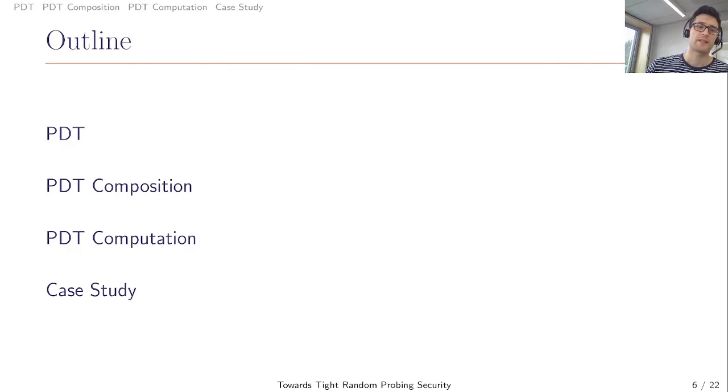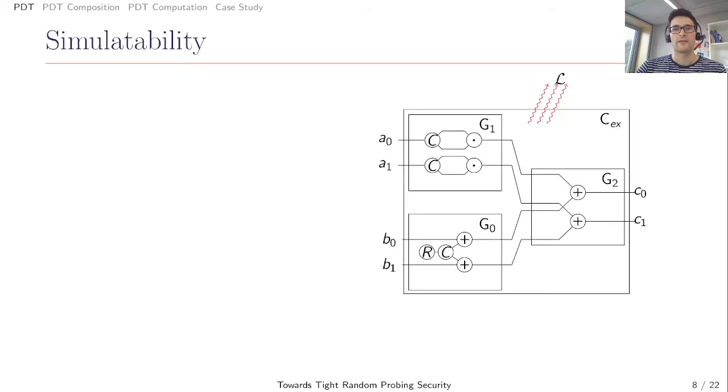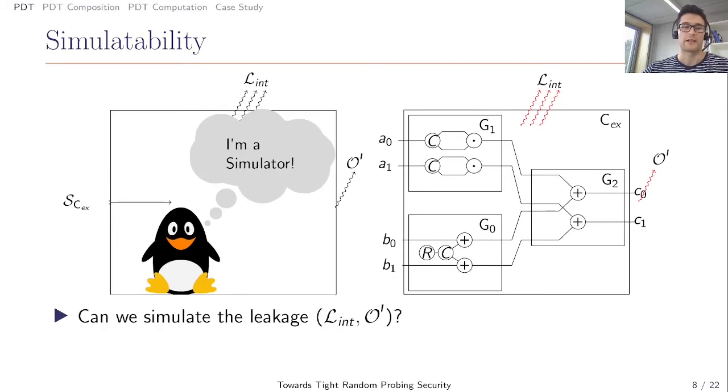For our new techniques we used a new definition, the prop distribution table PDT. In the following we will first explain the PDT, then we will give some composition results and explain how to compute them. In the end we will analyze the AES box with our PDT. So let's define the prop distribution table. For this we will consider our circuit again. Here you can see our example circuit with leakage L. For definition of the PDT we have to distinguish between internal leakage and output leakage.